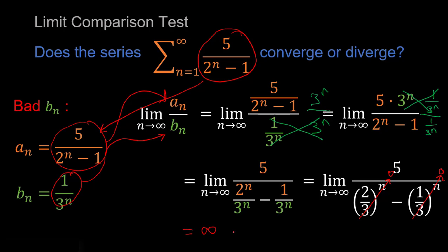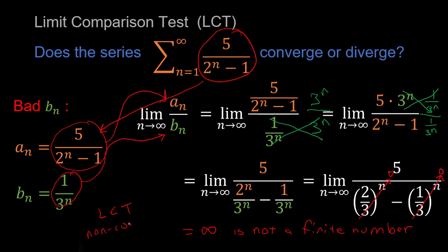Unfortunately, infinity is not a finite number, so this attempted limit comparison test does not satisfy the criteria where the limit c must be finite. We haven't satisfied that criteria because we picked a bad b sub n — 1 over 3 to the n goes to zero much faster than 5 over 2 to the n minus 1. Therefore these two sequences are not good to compare using the LCT, and we say: LCT non-conclusive.